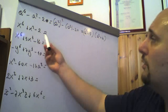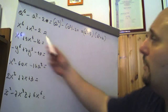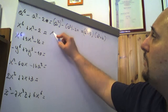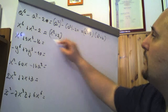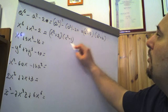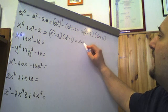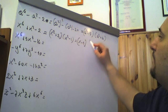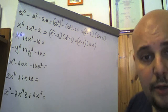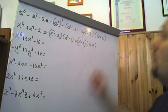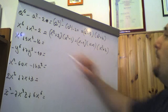Così come qui la variabile è x²: 2 + (−1) = 1 e 2 × (−1) = −2. Quindi questo è (x² + 2)(x² − 1), dove x² − 1 è una differenza di quadrati scrivibile come (x − 1)(x + 1). La scomposizione di x⁴ + x² − 2 è pertanto (x − 1)(x + 1)(x² + 2).